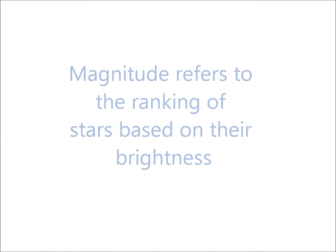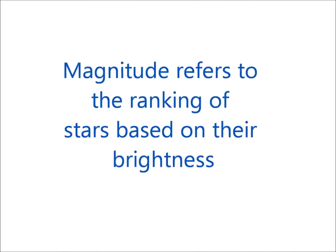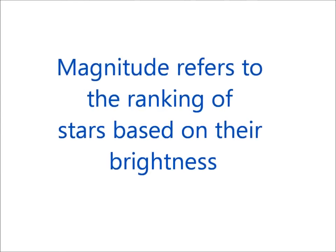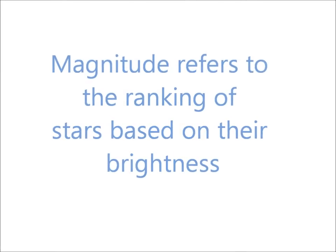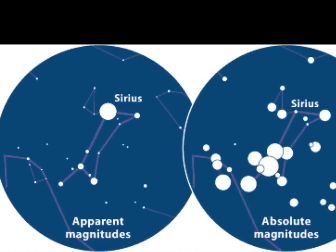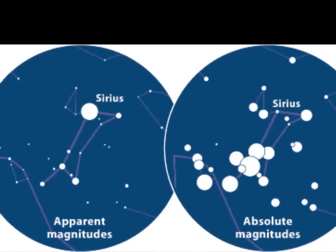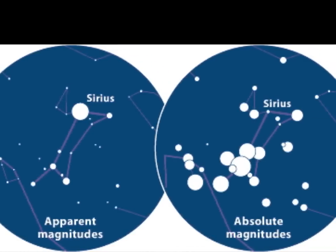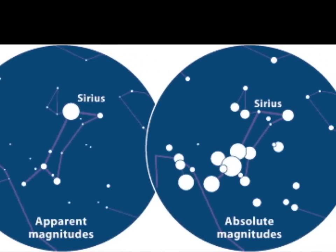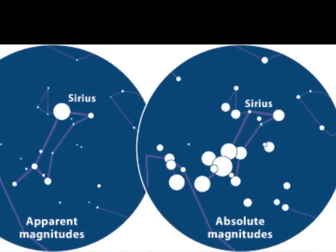Magnitudes of Stars. Magnitude refers to the ranking of the stars based on their brightness. There are two types of magnitudes: apparent magnitude and absolute magnitude.